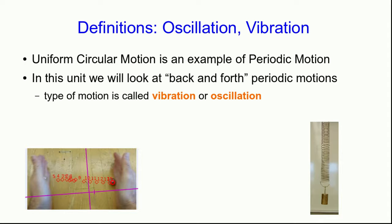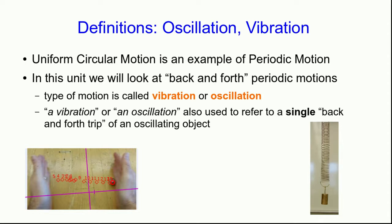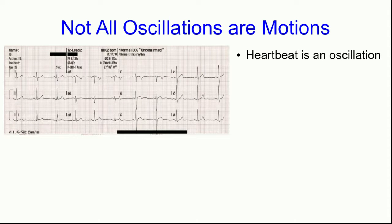This type of motion is called a vibration or an oscillation. The two words mean exactly the same thing. We also use a vibration or an oscillation to refer to a single back and forth trip of something that is oscillating. Although we're going to focus on moving objects that are oscillating, not all oscillations are motions. For example, a heartbeat is an example of an oscillation, and many circuits have oscillations going on in them which are electrical oscillations instead of things moving.